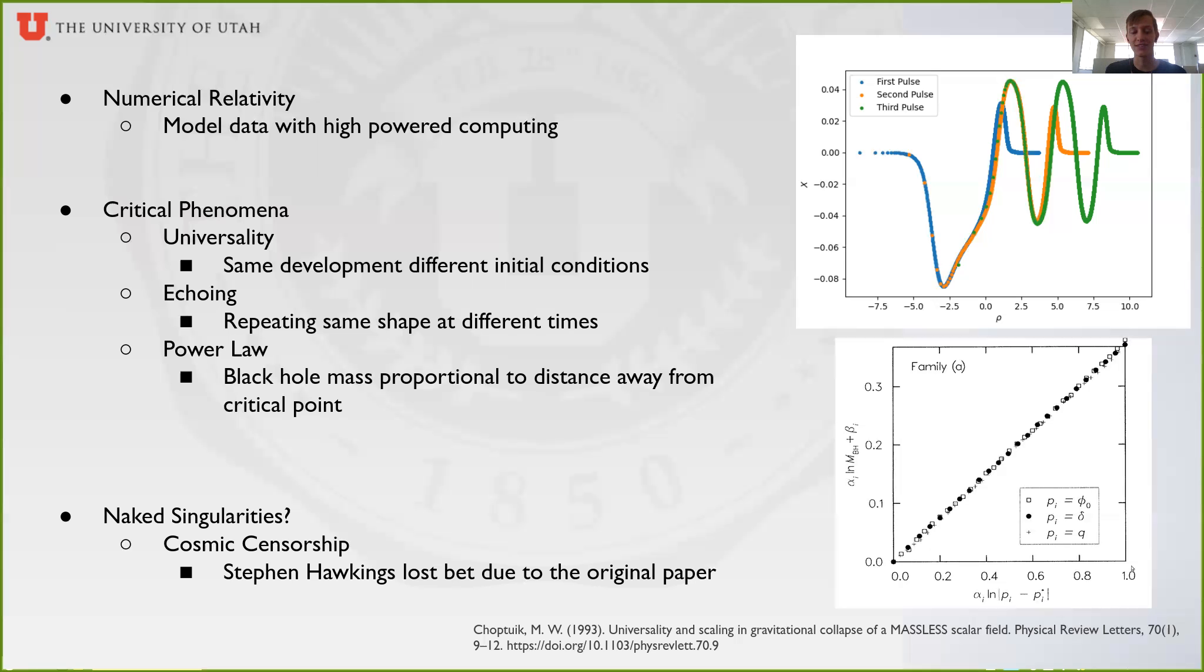But actually, a fun fact: due to this initial paper by Matthew Choptuik, Stephen Hawking lost the bet that it was impossible to create a naked singularity with physical initial data. As you can see, Matthew Choptuik was able to do it.